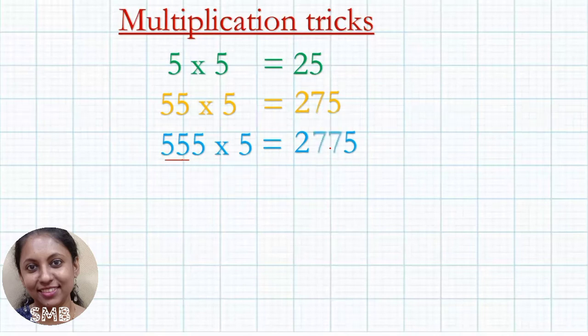Same way here 3 fives in the multiplicand, so 2 sevens will come here. Same way 5555 into 5, first digit is 2, last digit is 5. So here 4 fives are there, so 4 minus 1, 3 sevens will come in the middle.